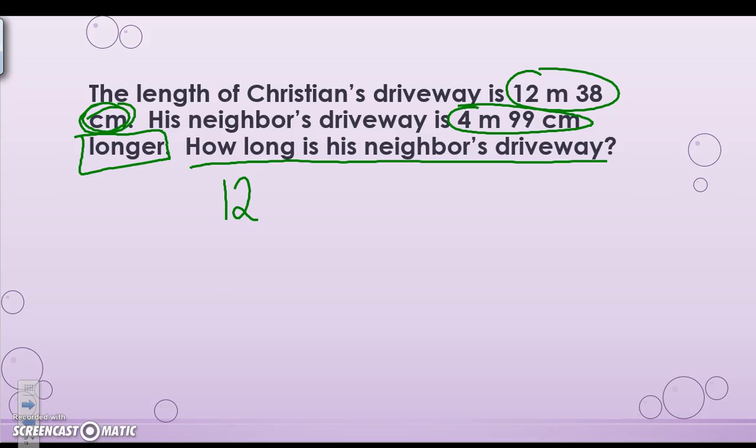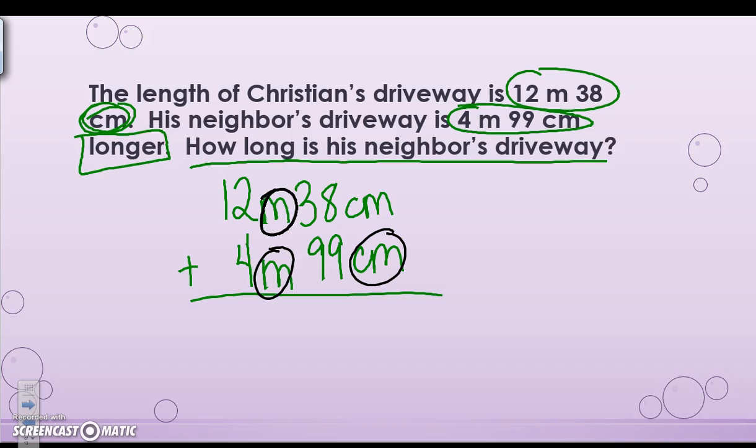We're going to start first with Christian's driveway, 12 meters 38 centimeters, and then the second driveway is 4 meters 99 centimeters. Now longer tells me I need to add because this second driveway is longer than the first one. Before I add, I see that I have different units here, so I need to make them all the same. Remember, we like to go from the bigger unit to the smaller unit.